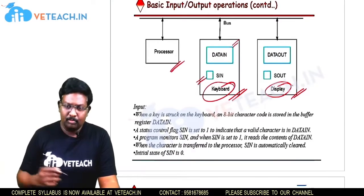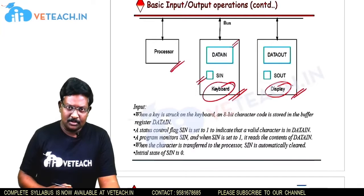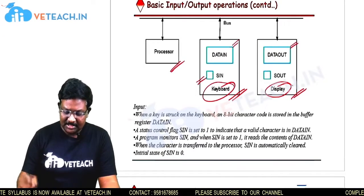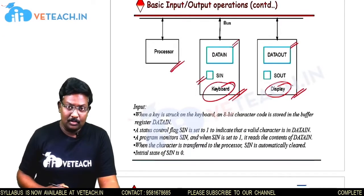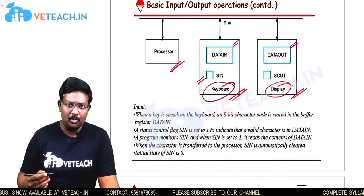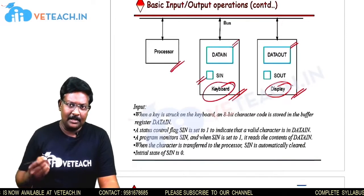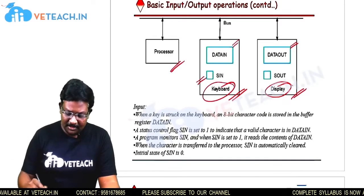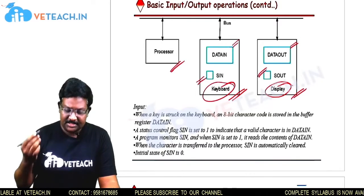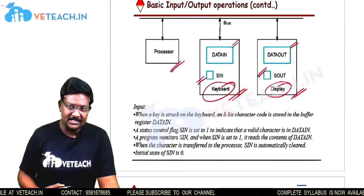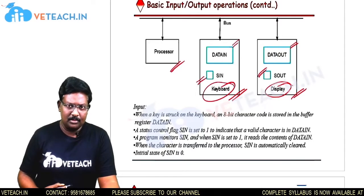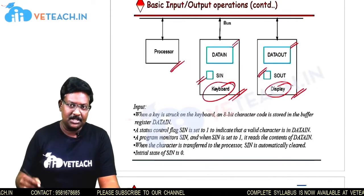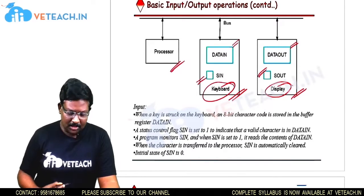Similarly, in the output device we have two components: a data-out register, which holds data in binary, and a flag register called SOUT, which holds the status information of the output device.